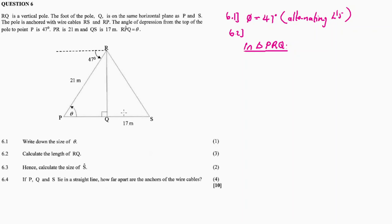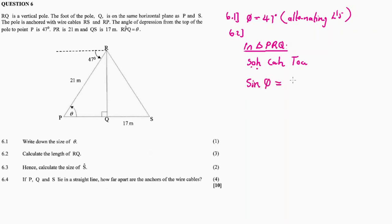RQ is the opposite side. I'm given the hypotenuse as well as an angle. So, it means I use sine. Now, sine theta — and theta is 47 degrees. Using SOH-CAH-TOA: sine of an angle equals opposite over hypotenuse. So, sine theta is going to be equal to the opposite over the hypotenuse. The opposite in this case is RQ, and the hypotenuse is PR.